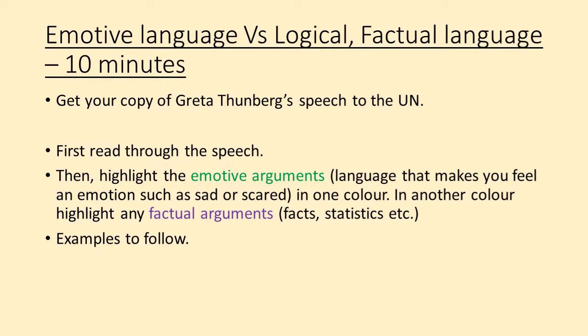Okay, so now we're going to be looking at emotive language versus logical factual language. I'd like you to get your copy of Greta Thunberg's speech at the UN, read through the speech, and then highlight emotive arguments in one colour and factual arguments in another colour. Emotive arguments use language that makes you feel a particular emotion, such as scared or sad. Factual arguments use facts and statistics — things that can be proven to be true. Both types are extremely effective in persuading people, and if you want to be most effective you will use a combination of them both. Please look at the examples before you go into your analysis.